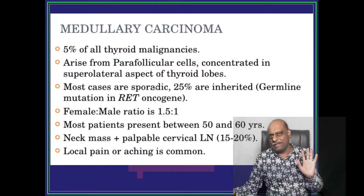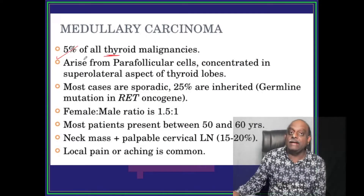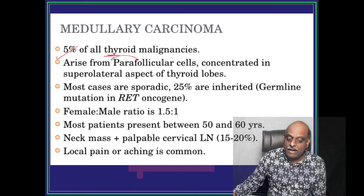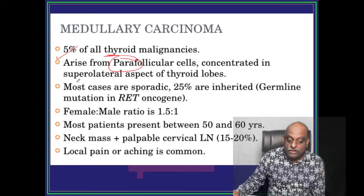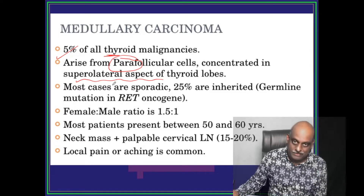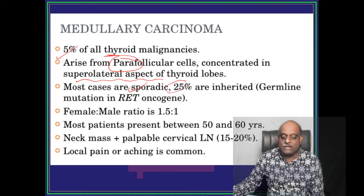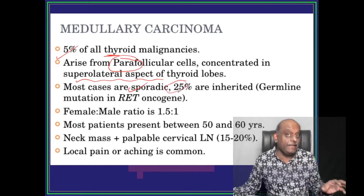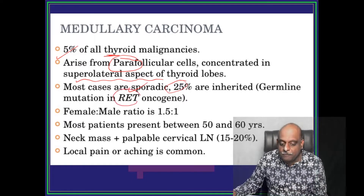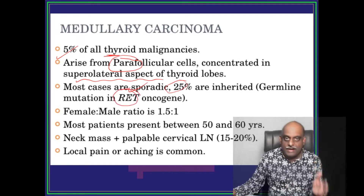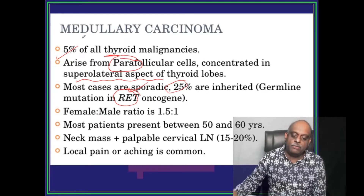We will cover five points about medullary carcinoma. It represents five percent of all thyroid malignancies. From where does it arise? Parafollicular cells, which are located on the superior lateral aspect of the thyroid lobe. Medullary carcinoma is sporadic most of the time, but 25 percent can be familial, where there are germline mutations in the RET proto-oncogene — R-E-T oncogene — which you should remember in relation to medullary carcinoma.